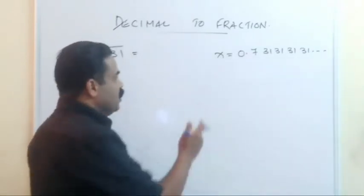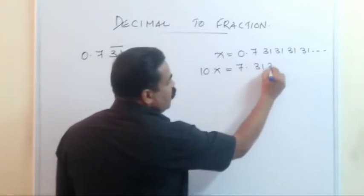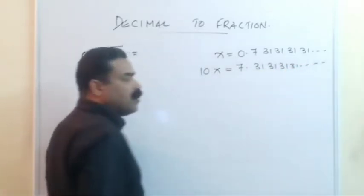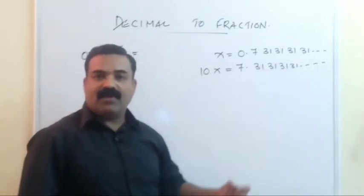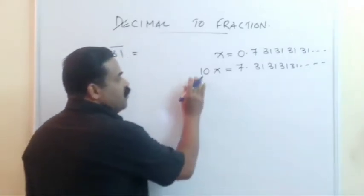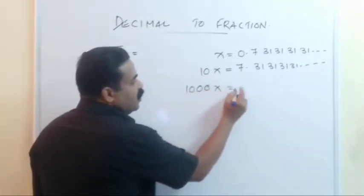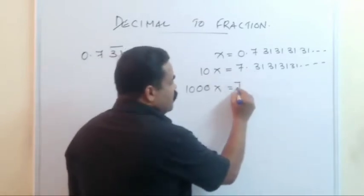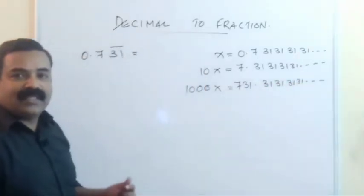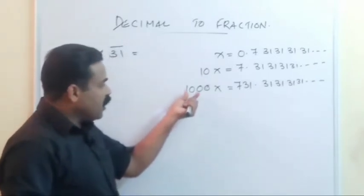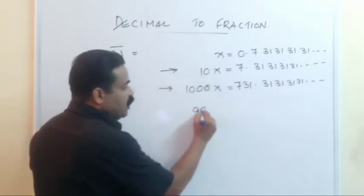Since one digit is not repeating, multiply both sides by 10 first: we get 10x = 7.313131 continuing. Now after the 7, two digits are repeating, so multiply both sides by 100: 10x × 100 gives 1000x on the left, and 7.3131... × 100 gives 731.313131 continuing on the right.